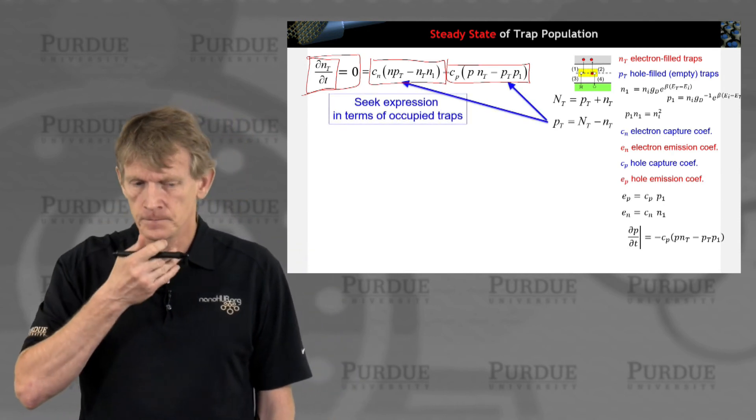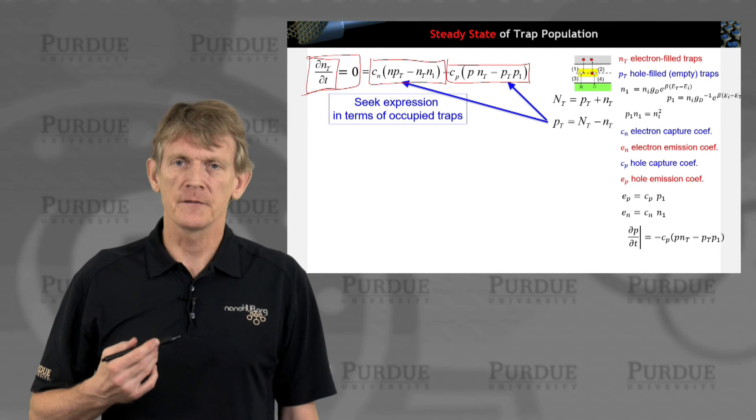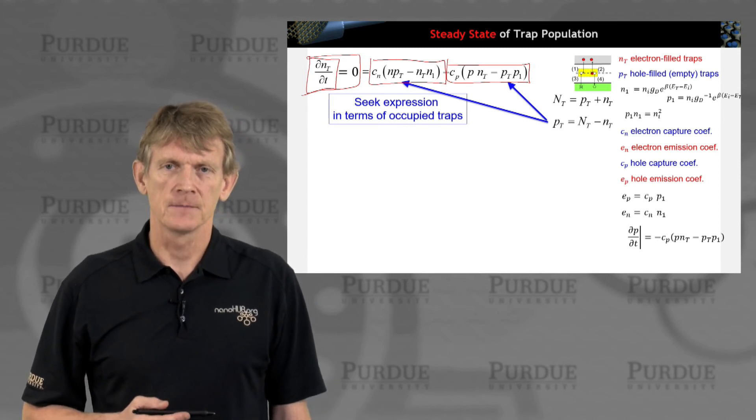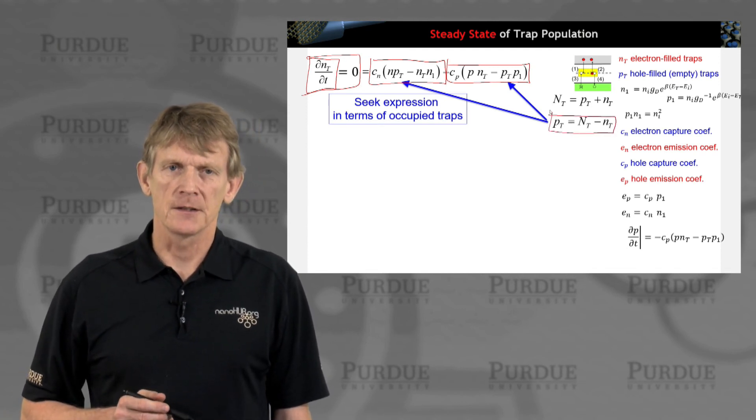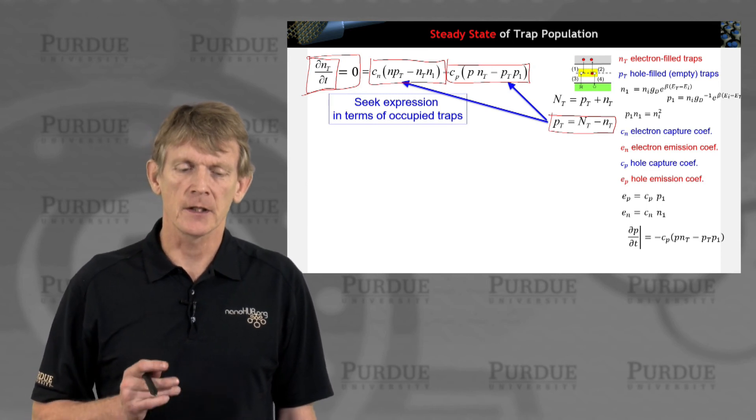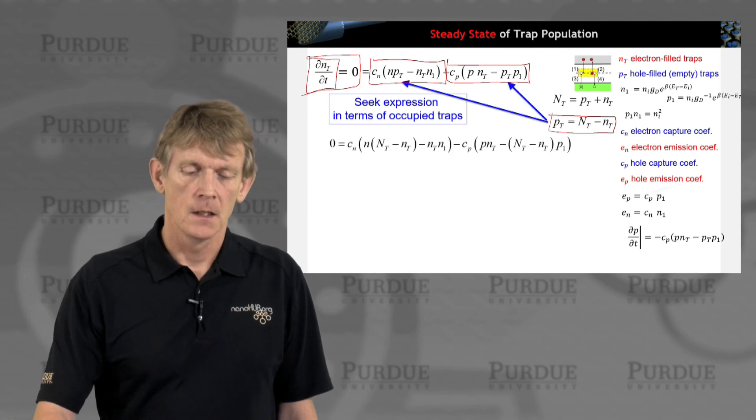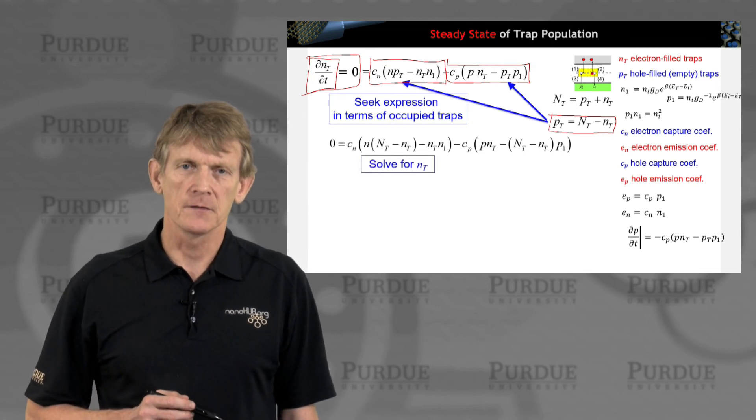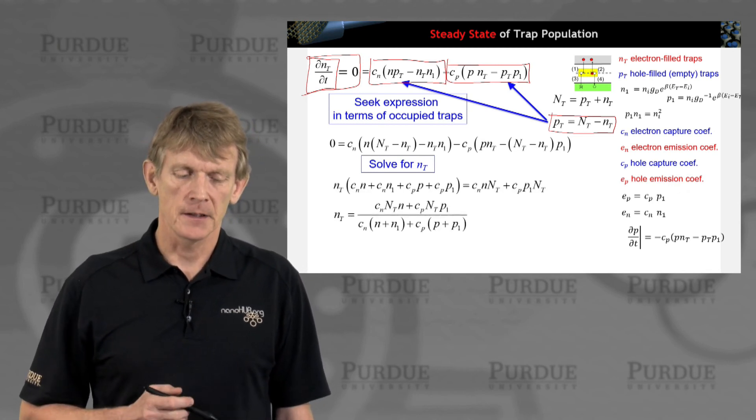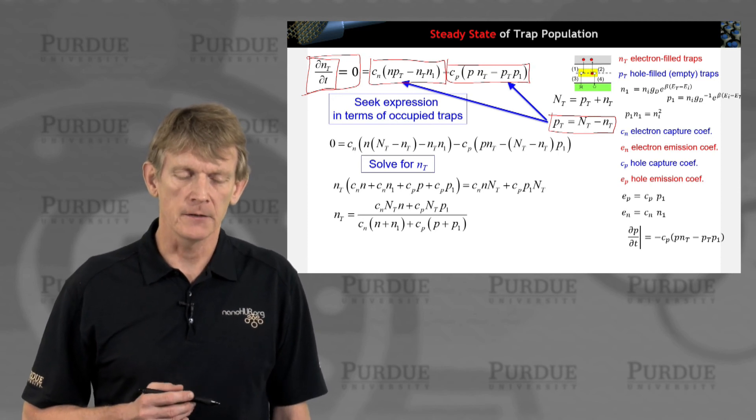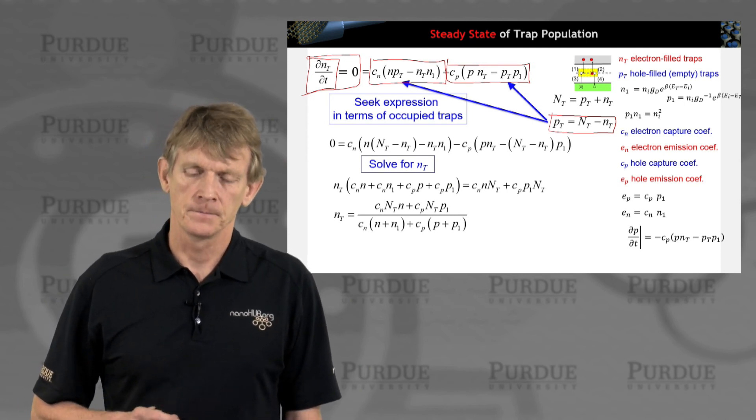Now we'd like to calculate everything in terms of occupied traps. We just want to look at number of electrons in a trap, occupied traps. We're going to substitute the empty traps, which are the difference between the total traps and the occupied traps. We're substituting that into the expression above. We're going to solve this expression for the number of occupied traps. We'll pull N_T out and then pull it into the denominator like this. So now we have a longish expression for the number of traps, the occupation of the traps.